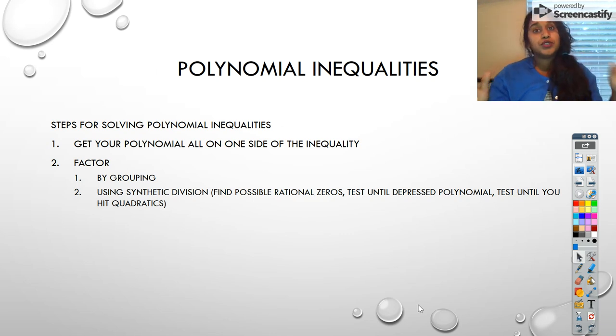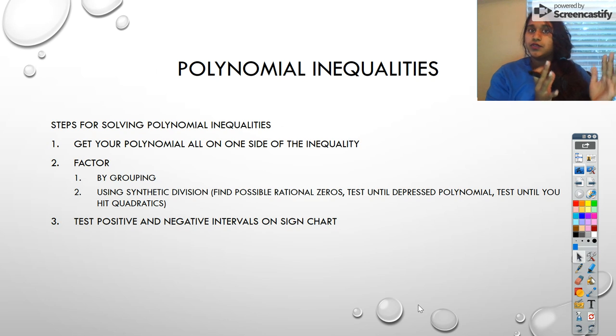Then you tested those possible rational zeros using synthetic division. Once you hit a depressed polynomial, which meant you had a remainder of zero. Once you hit that depressed polynomial, you started testing on the depressed polynomial until you got to a depressed polynomial that was actually quadratic. Because once you hit the quadratic, you can simply factor. Then you're going to create a sign chart and test the intervals, see if they're positive or negative. And finally, you get your answer. You solve for it, whatever that interval is, multiple intervals.